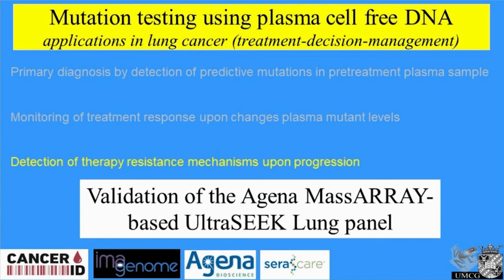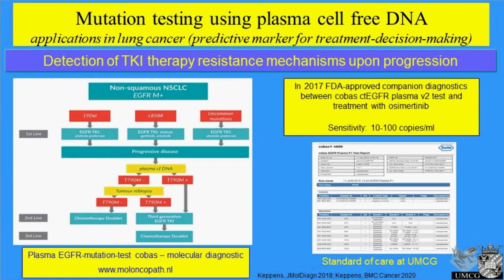The first clinical application I'd like to share is detection of therapy-resistant mechanisms upon progression. In current diagnostics, we already use the COBAS ctEGFR plasma test, an FDA-approved test approved in 2017, to detect the T790M mutation. This is a very common mutation identified as a resistance mechanism when treating patients with anti-EGFR therapy — in about 60% of cases after treatment with EGFR receptor inhibitors. There is now a drug, osimertinib, for which patients respond very well if they have a T790M mutation. The companion diagnostic test here is to use ctDNA — the COBAS test — for treatment decision-making, switching to osimertinib.